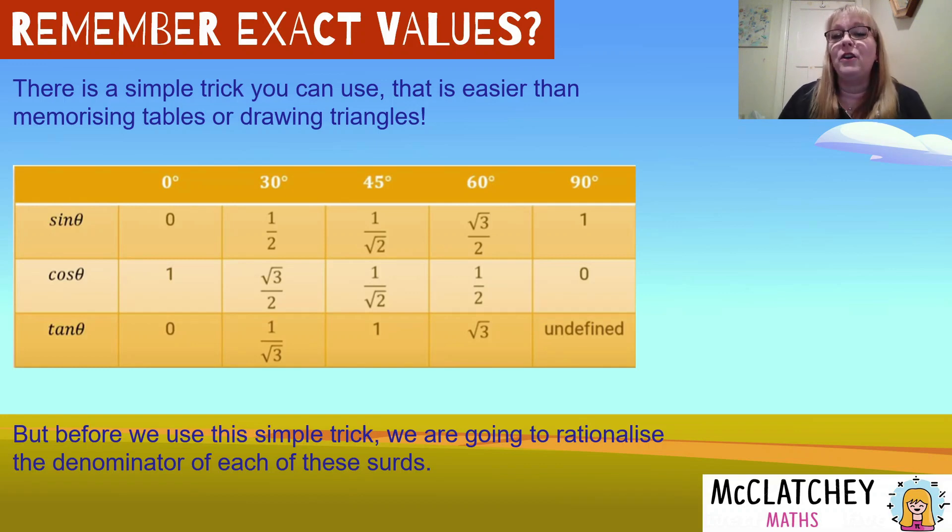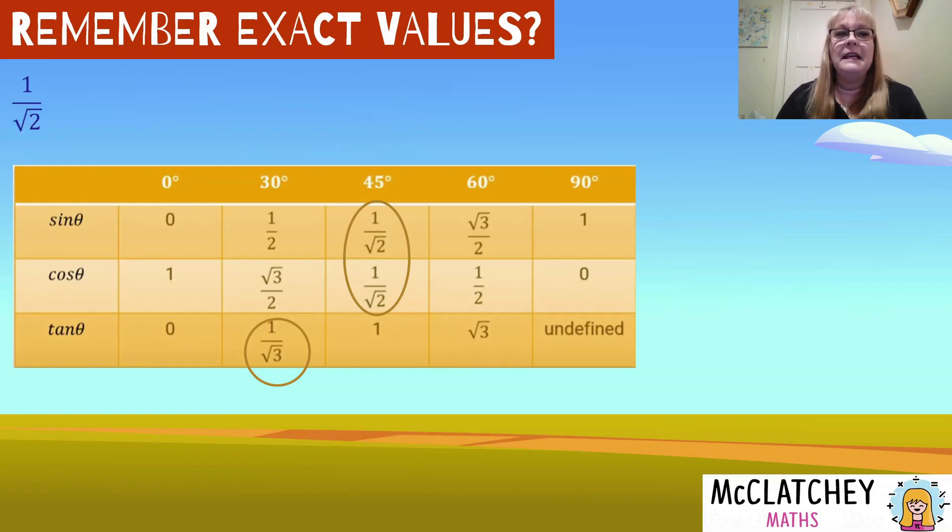Before I take you through this simple thing called the hand trick, we're going to transform this table by rationalizing the denominator of our thirds and that way the hand trick will work. If you're not sure about what it means by rationalizing the denominator, I'm just going to quickly show you these three thirds here. You'll notice there is a third on the bottom, root two and root three. We're going to transform those fractions so they have whole numbers on the denominator, not thirds.